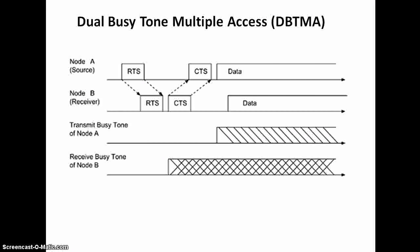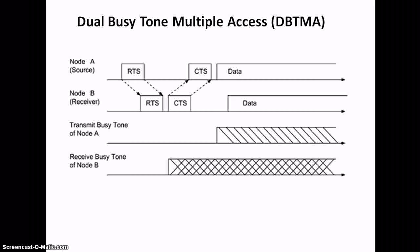In MACABI, a source node sends out a transmit BG-tone message to the surrounding nodes prior to data transmission. Neighboring nodes that hear the transmit BG-tone are prohibited from transmitting and will ignore any transmission received.